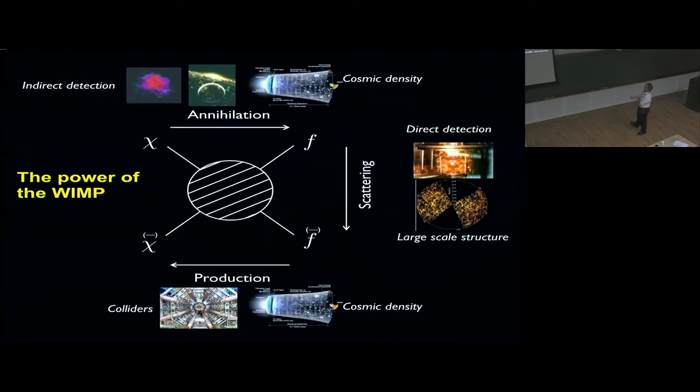This is the power of the WIMPs, this diagram shown by John Ellis. Annihilation and production fix the cosmic density of the WIMPs to the right value. Production allows the production of WIMPs at colliders. Annihilation allows for their detection indirectly from the halo of galaxies or from stars if they get into stars. If we cross the diagram, we have scattering which allows direct detection in the laboratory and fixes the cold nature of these particles.